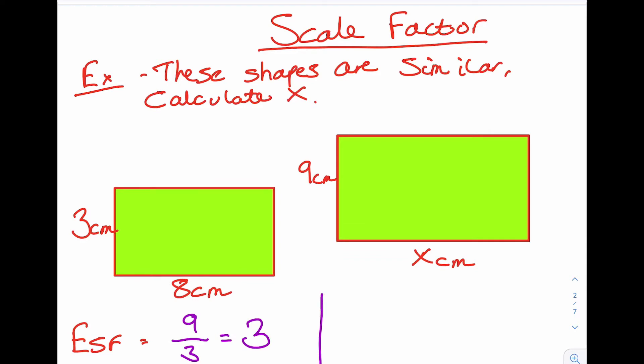Then to find X is very easy. We just do X equals our scale factor times our side. So the scale factor was 3. The same side as X on the small shape is 8. So I times them by 8.